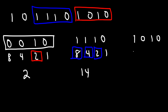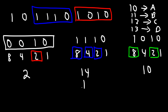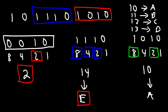And for the last group, the significant values are 8 and 2, which give us 10. Now recall that 10 corresponds to A, 11 corresponds to B, 12 corresponds to C, 13 corresponds to D, which means 14 corresponds to E. We can replace 10 with A. So the answer is 2EA in the hexadecimal system.